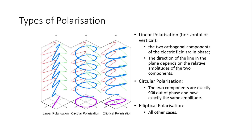Linear polarization is horizontal or vertical. The two orthogonal components of the electric field are in phase, and the direction of the line in the plane depends on the relative amplitude of the two components. In circular polarization, the two components are exactly 90 degrees out of phase and have exactly the same amplitude. Elliptical polarization covers all other cases.